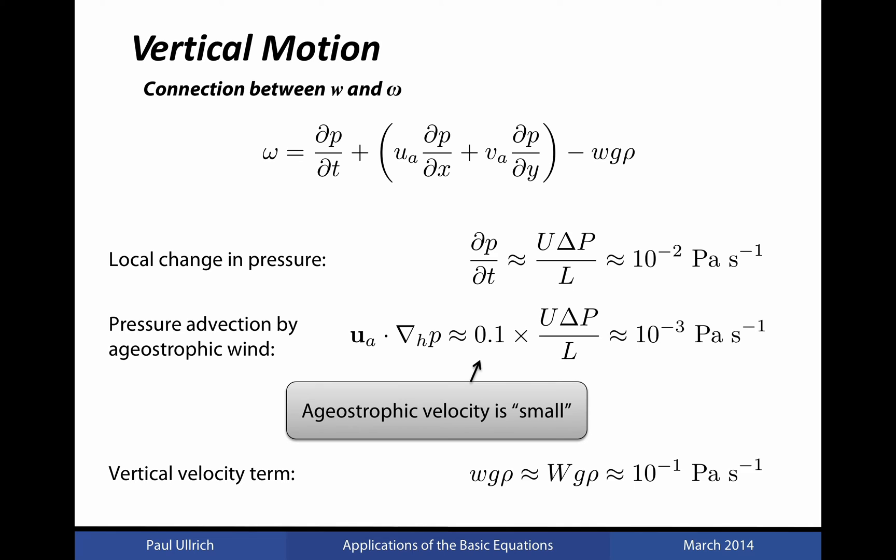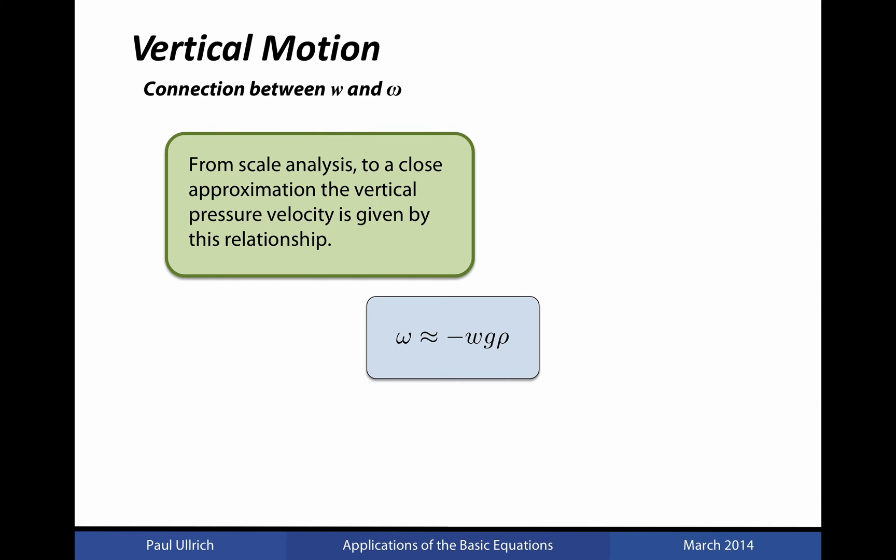Comparing the scales associated with each of these terms, it is clear that the dominant term in diagnosing the vertical pressure velocity is the last term in this expression, which is related to the vertical velocity in height coordinates. So, from scale analysis, we can use this approximation to estimate the value of omega given the vertical velocity in height coordinates, or vice versa.